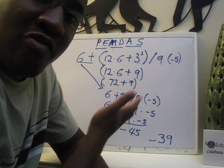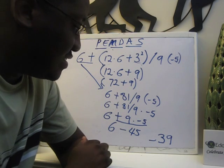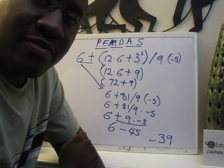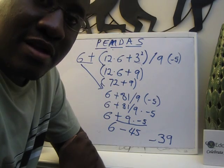Practice. You can watch this video over and over again to see the steps I did and see if you can get negative 39. Good luck and stay blessed.